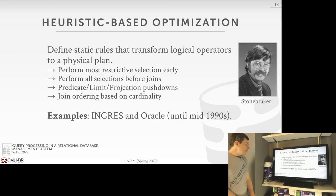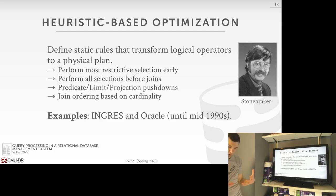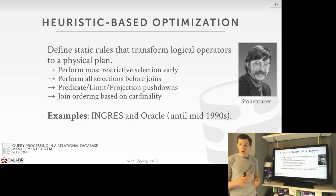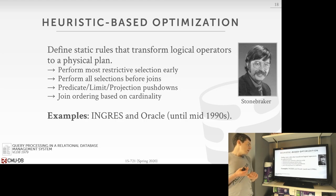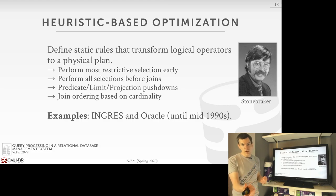The very first query optimizers for relational database systems in the 1970s used heuristic-based transformations. The idea is that in the code itself, you define rules that transform logical operators into physical operators. The most common thing would be: if I'm doing a scan and I have an index that matches all the predicates in my where clause, that's the index I'd want to use. That's the 'Sargeable' stuff we talked about earlier.